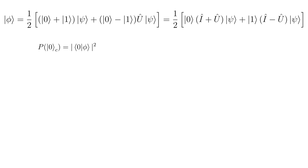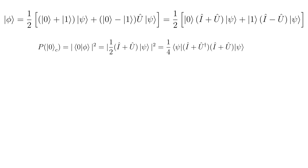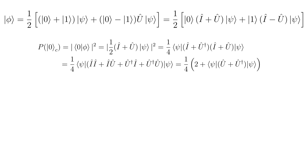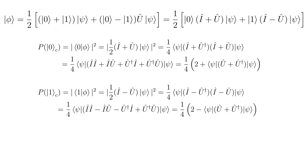Now let's calculate them. Phi is the state of the system before the measurement. When we measure the control qubit, it will be thrown into one of the eigenstates, 0 or 1. According to the measurement postulate, the probability to measure the control qubit in state 0 is the following squared inner product. Now we substitute the expression for Phi. State 0 is orthogonal to state 1, and therefore the second term vanishes. After multiplying two expressions in brackets and doing some simple math, we get the probability to measure the control qubit in state 0. We can also calculate in the same way the probability of measuring the control qubit in state 1.